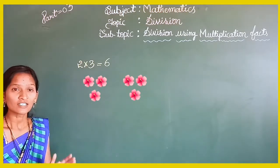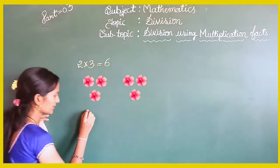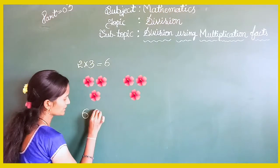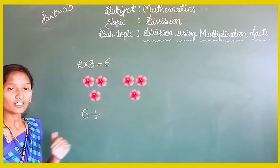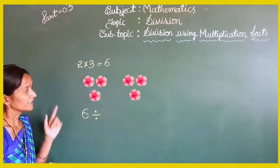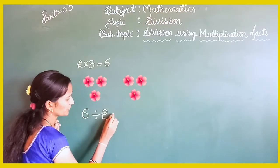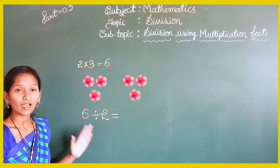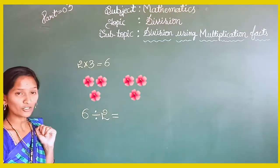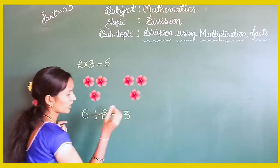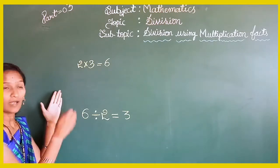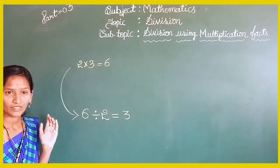Now how can you write this as a division sentence? In division, first write the total number of flowers — that is 6. Next write the division symbol: 6 divided by. After that write the number of groups — that is 2. At last write the number of flowers in each group — that is 3. So from this multiplication fact we get the division fact.